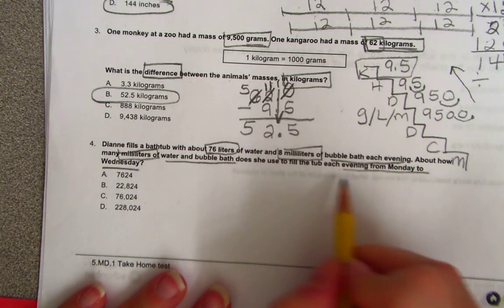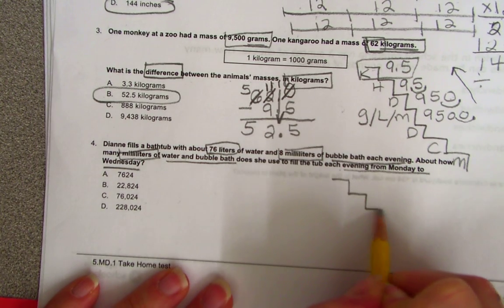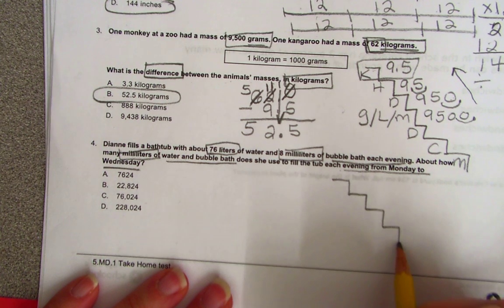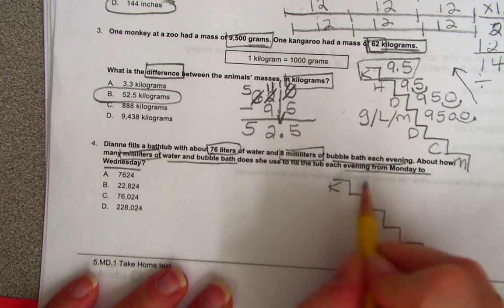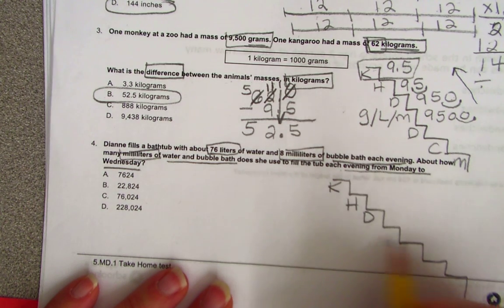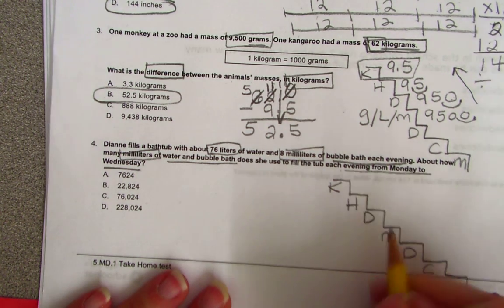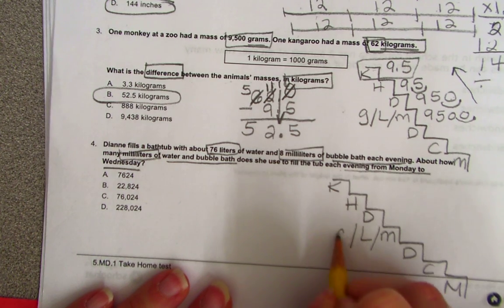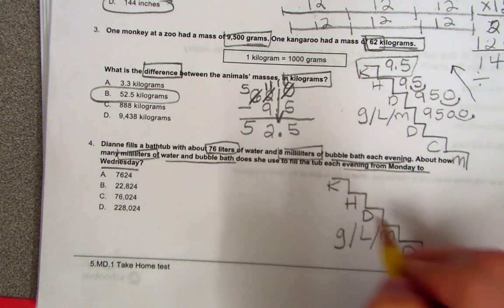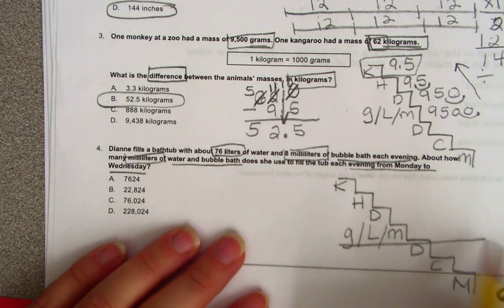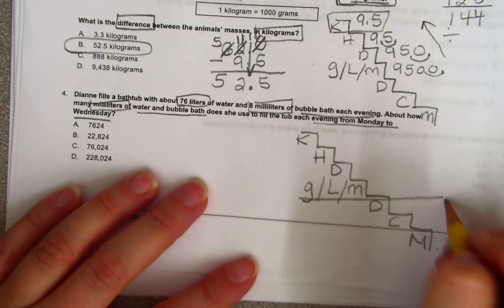So once again I got to draw my staircase. King Henry drinks many different chocolate milk, and the M is liters and grams. And we are moving from this area right here to milliliters. So we're going to go down the staircase.